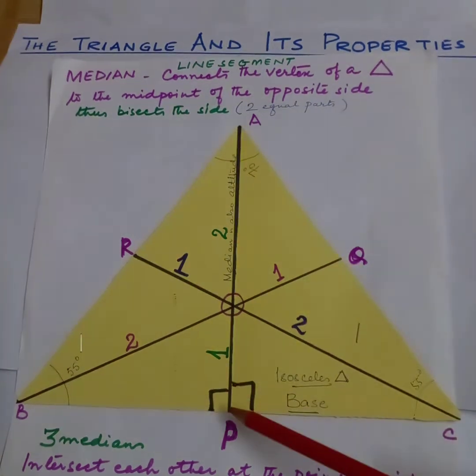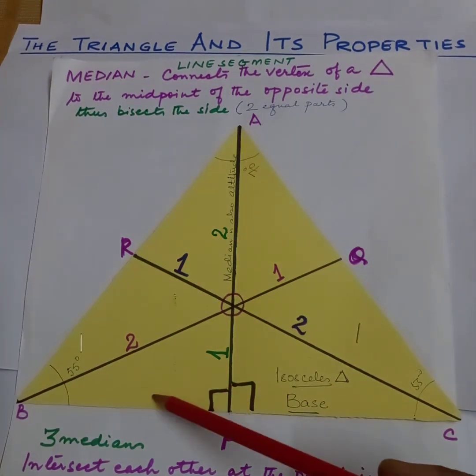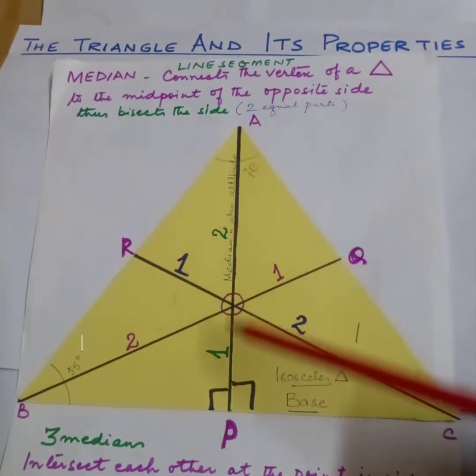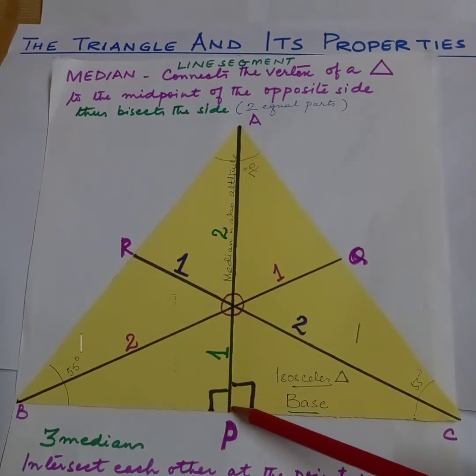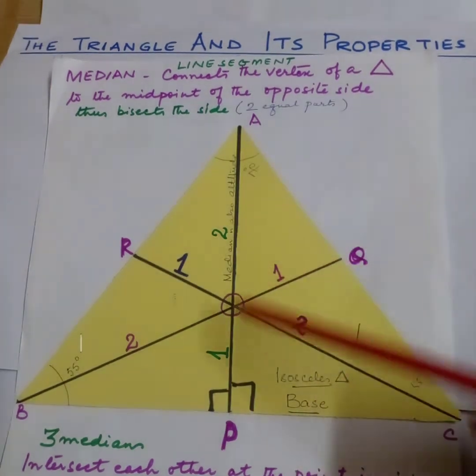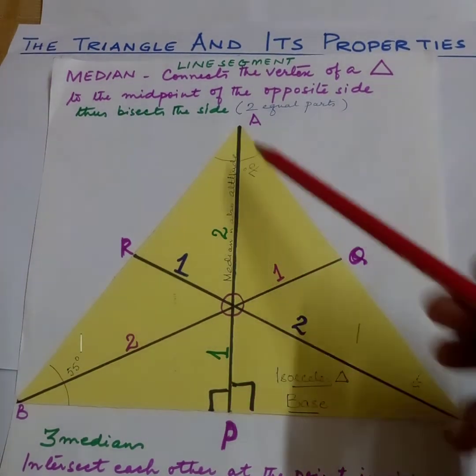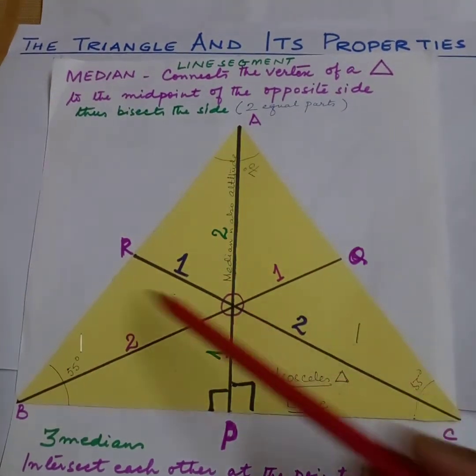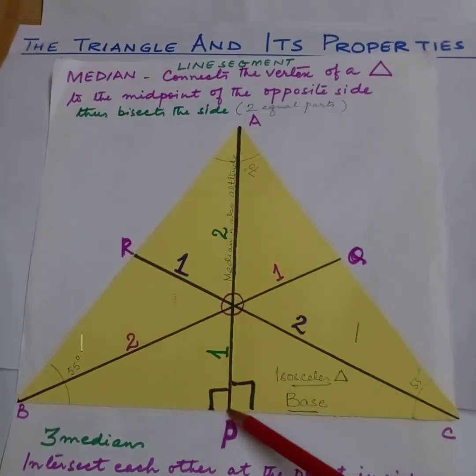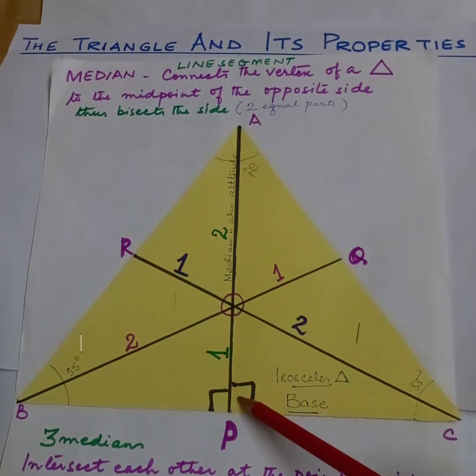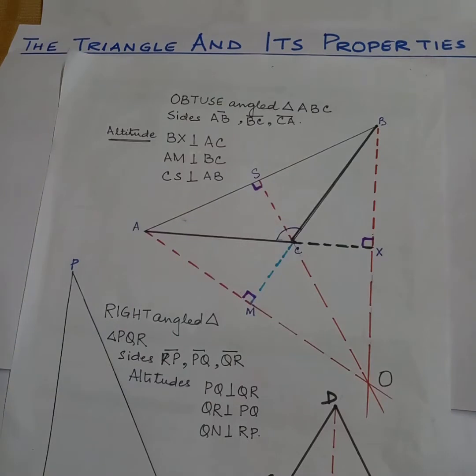Now here we talked about median. Since this is an isosceles triangle, the median on the base is also the altitude. This median is also the altitude because these two sides are equal and this is the base. From the base, the median makes a 90 degree angle. Now the altitude is the height of the triangle.